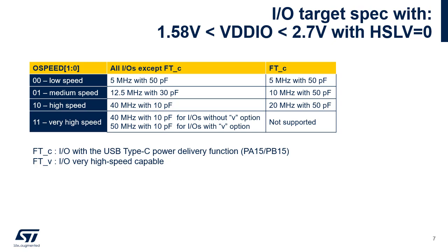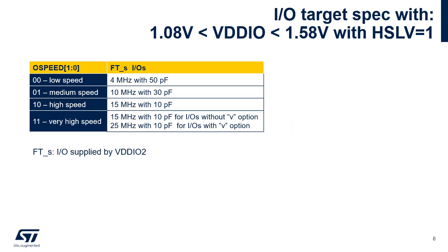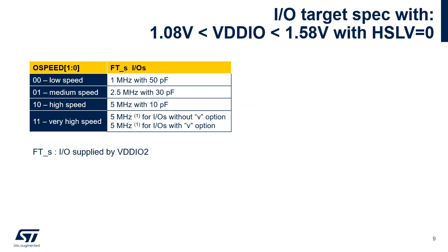Note that the maximum frequency of these FTC input/outputs is always provided for a 50 pF capacitive load. The next table is relevant when the VDDIO power supply is in the range of 1.08V to 1.58V and high-speed low-voltage mode is enabled. The final table covers the same VDDIO range of 1.08V to 1.58V with high-speed low-voltage mode disabled.